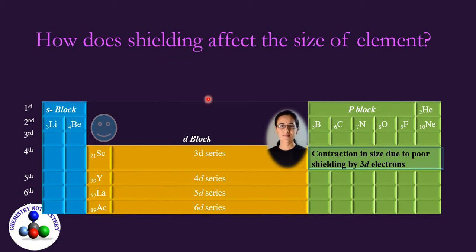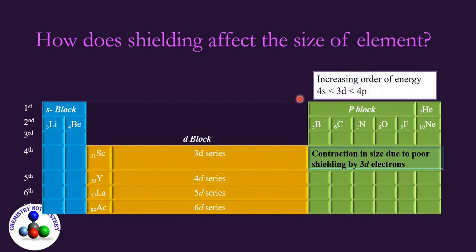According to n plus l rule, we know that the increasing order of energy of orbital is 4s then 3d then 4p. That means electrons are filled in 3d only after filling the electrons in 4s. And then electrons are filled in 4p. So those 4p electrons are weakly shielded by 3d electrons. That's why contraction in the size is observed in elements of 4p.